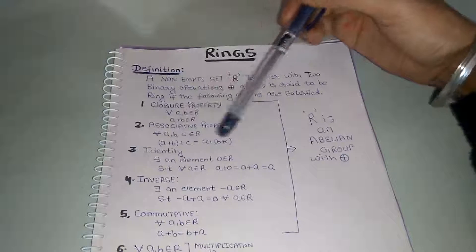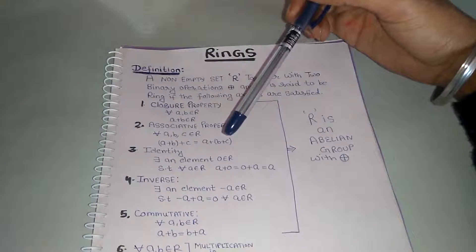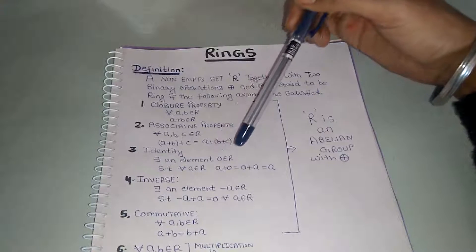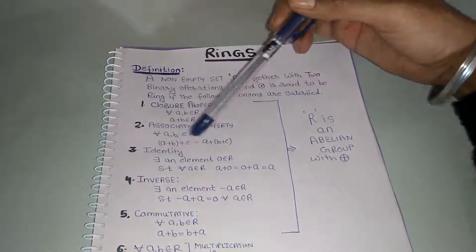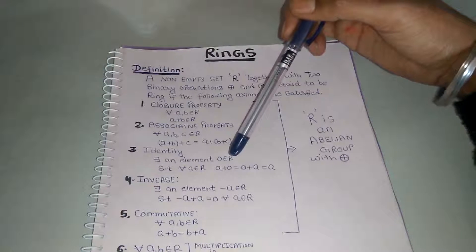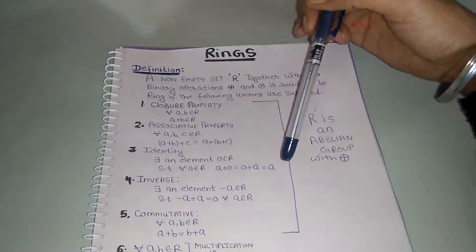Third one is identity: there must exist an element 0 belongs to R such that for all A belongs to R, A plus 0 must be equal to 0 plus A must be equal to A.